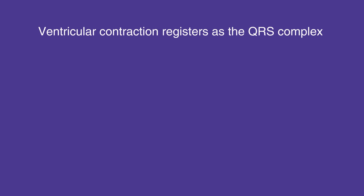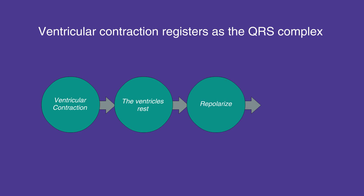The ventricular contraction registers as the QRS complex. Following ventricular contraction, the ventricles rest and repolarize, which registers as the T wave. The atria also repolarize, but this coincides with the QRS complex; therefore, it cannot be observed on the ECG strip.